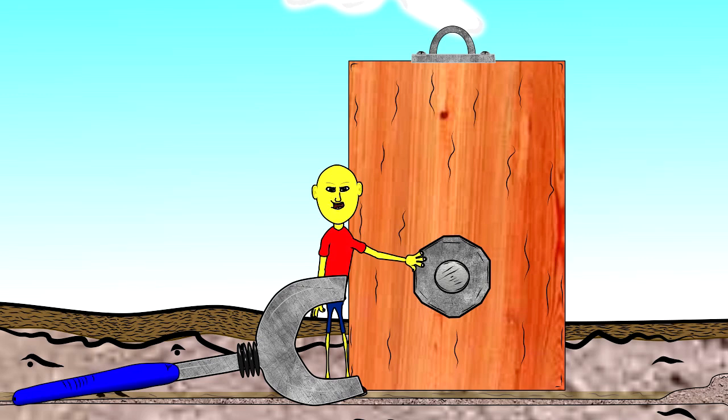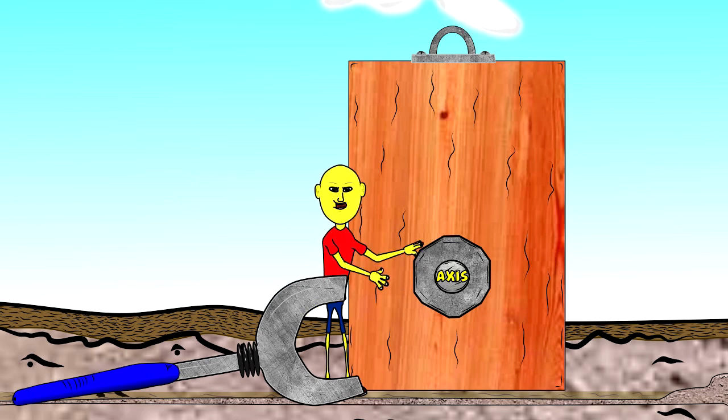Alright, so this nut is the thing I want to rotate. It's screwed onto this bolt. The bolt is acting as the axis or the fulcrum in this case. So if I try to use my hands to generate torque...